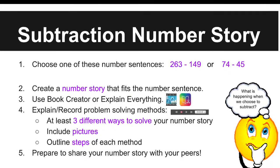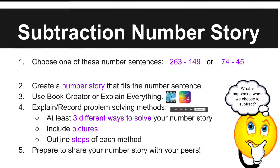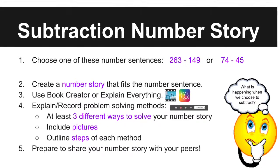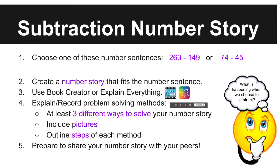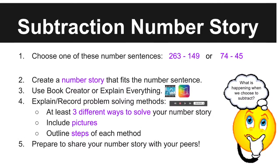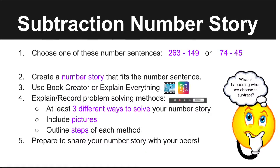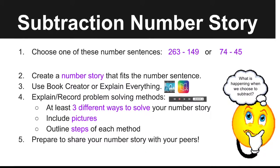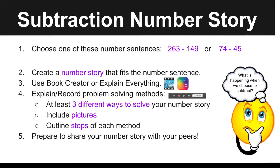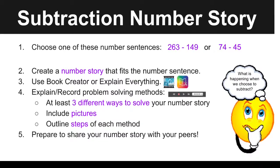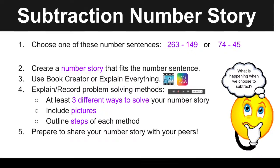The subtraction number story task is identical to the addition one, just using subtraction. Students choose one of these number sentences: 263 minus 149 or 74 minus 45. Their job is to create a number story that fits the number sentence they chose and use Book Creator or Explain Everything to write it down. The next step is to explain at least three different ways to solve their number story, including pictures and outlining steps as if they were teaching a peer how to perform that method. They need to prepare to share their number story with their peers, which is another effective way to build and foster discourse in a primary classroom.